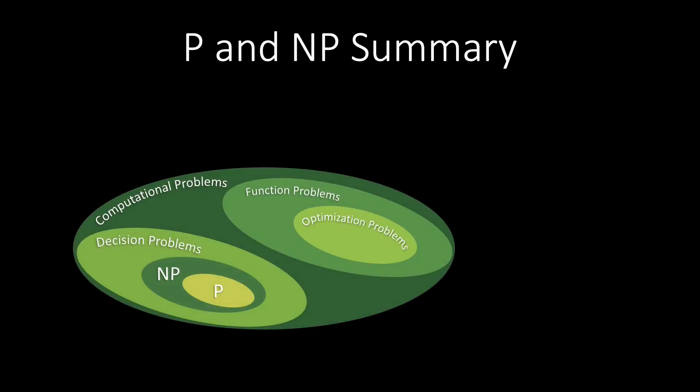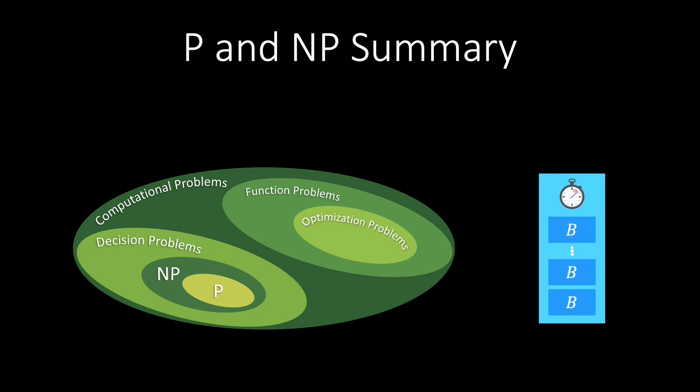Let's quickly summarize what we learned in this video. We have introduced the complexity classes P and NP, both special cases of decision problems. P includes all decision problems that we can solve in polynomial time, and NP includes those where we can verify a solution in polynomial time. To relate the complexity of different problems, we learned the technique of polynomial reduction. Finally, we introduced the problems vertex cover, independent set, and clique, and showed that they are all in NP and reducible to each other. Thanks for watching this video.